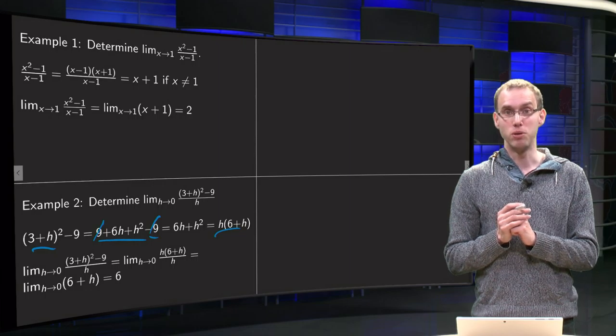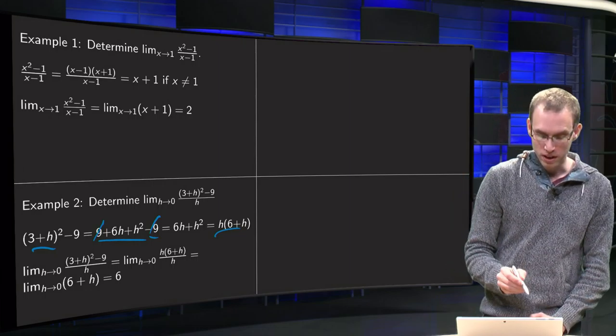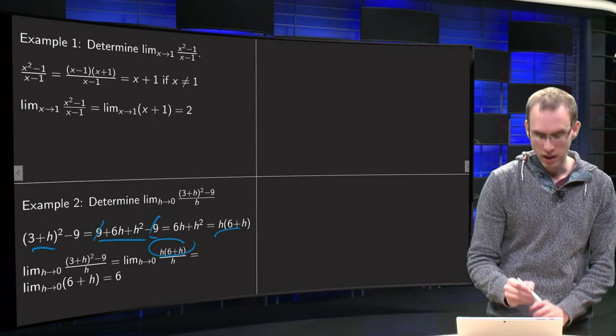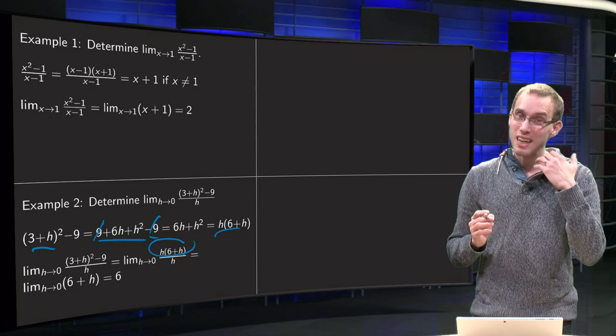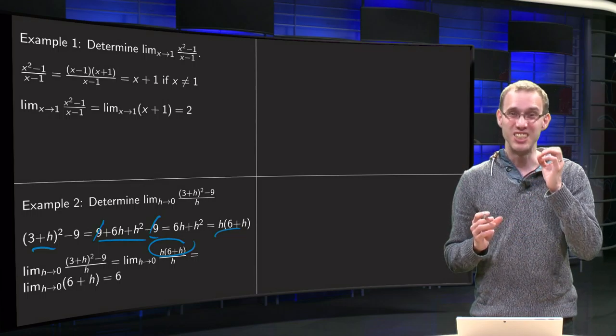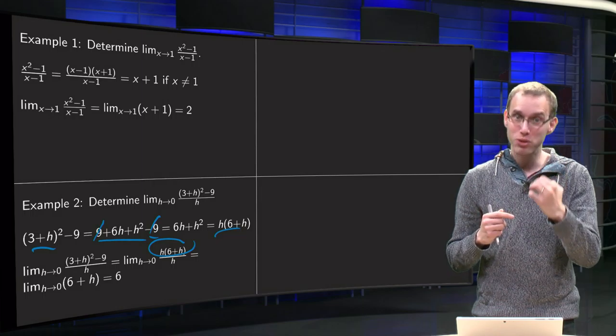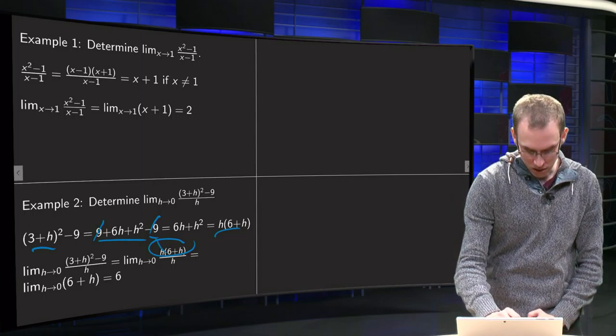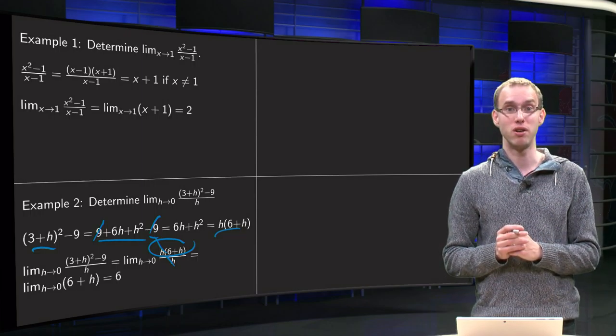And now we can compute our limit, because now something nice is going to happen. Plug in this factorization here, h times 6 plus h divided by h, now we are taking limit h to 0, so h is not equal to 0, so that means, because h is not equal to 0, that is why we can cancel out those factors of h over here.